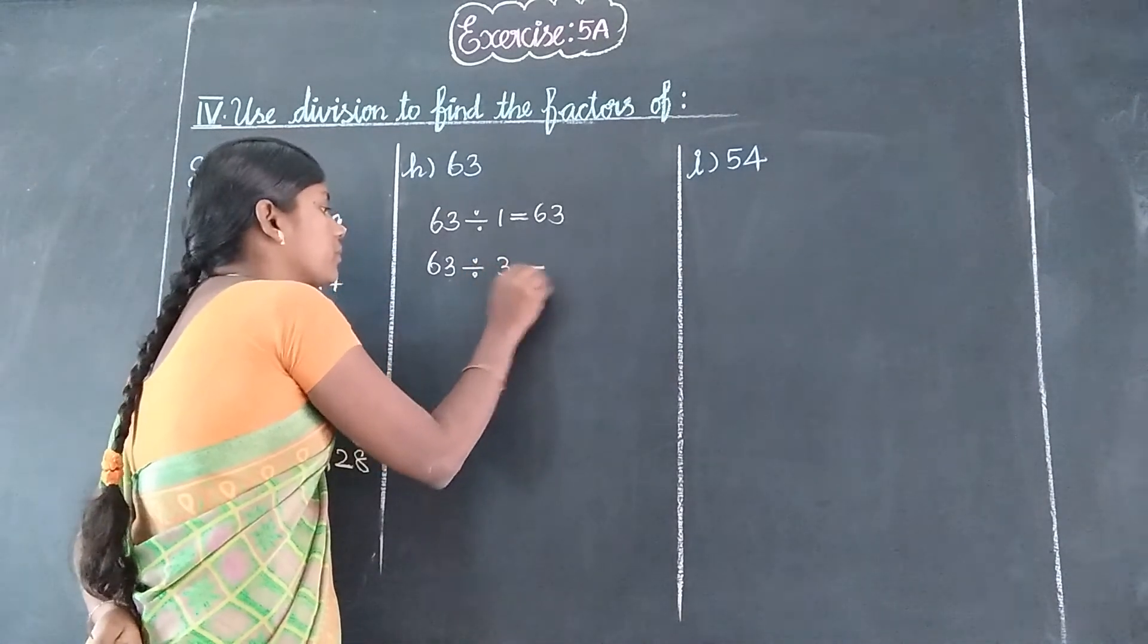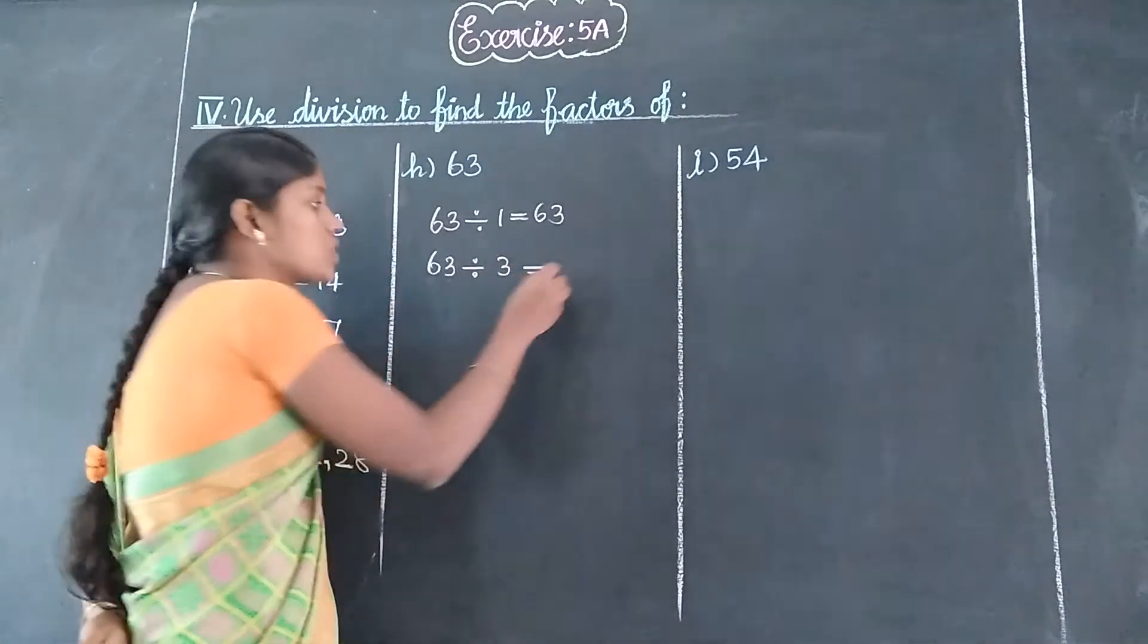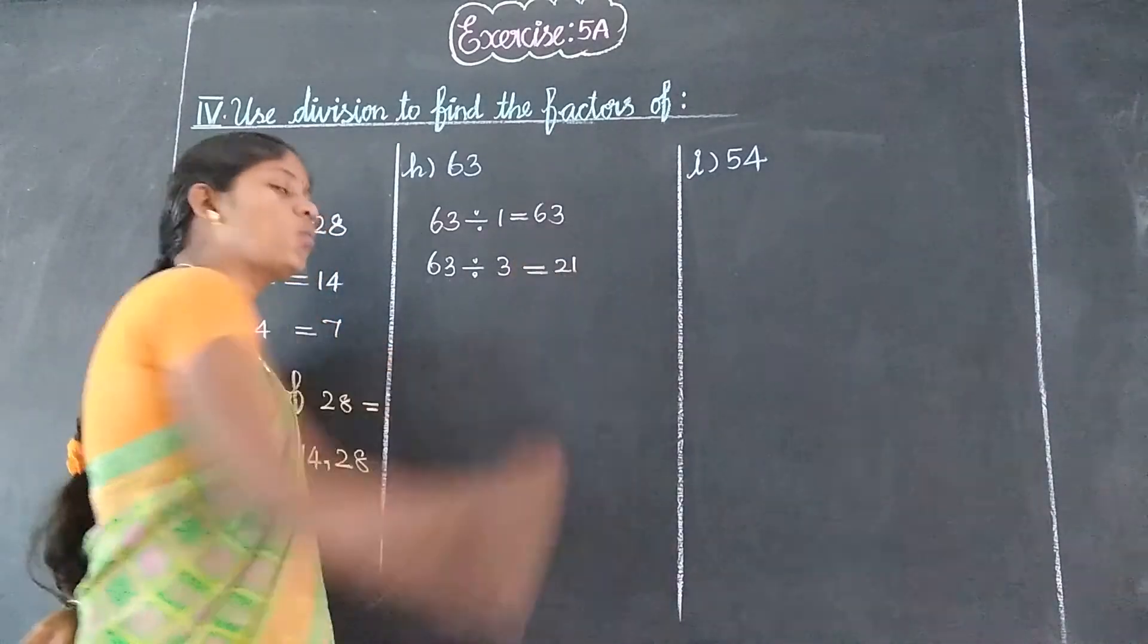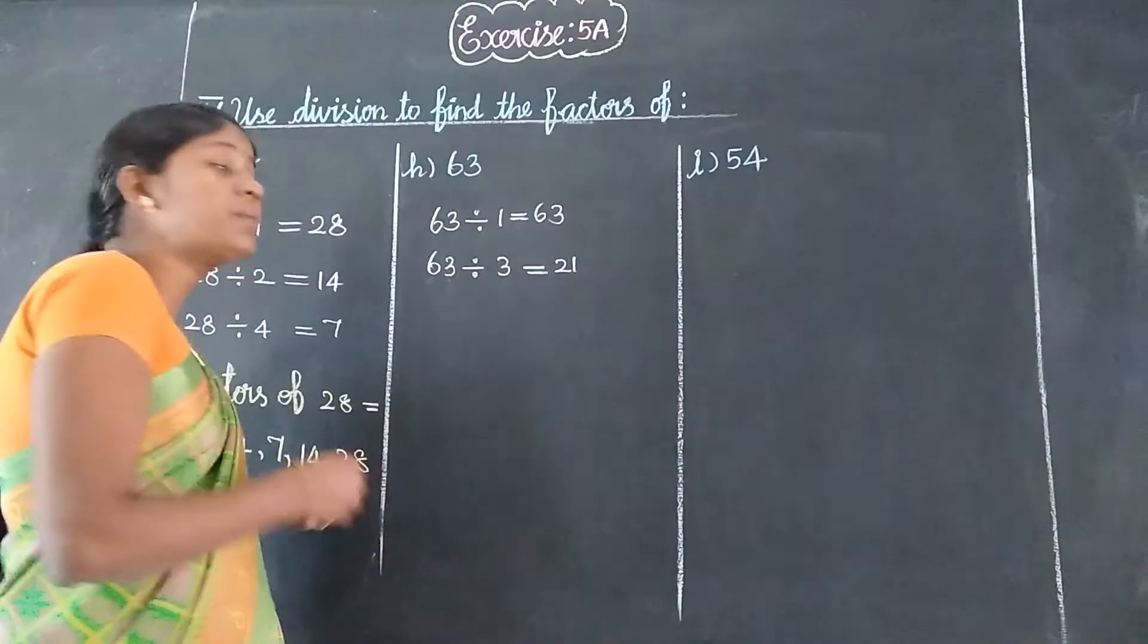So does 63 divide by 3? Yes. How many? Three is 6, 3 is 3. Twenty-one 3s are 63.